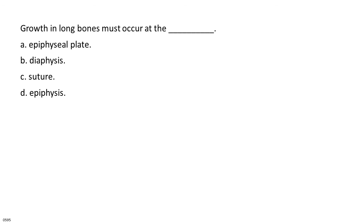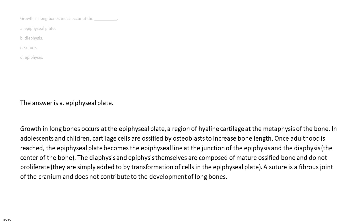Growth in long bones must occur at the: A. Epiphyseal plate. B. Diaphysis. C. Suture. D. Epiphysis. The answer is A, epiphyseal plate. Growth in long bones occurs at the epiphyseal plate, a region of hyaline cartilage at the metaphysis of the bone. In adolescents and children, cartilage cells are ossified by osteoblasts to increase bone length. Once adulthood is reached, the epiphyseal plate becomes the epiphyseal line at the junction of the epiphysis and the diaphysis. A suture is a fibrous joint of the cranium and does not contribute to the development of long bones.